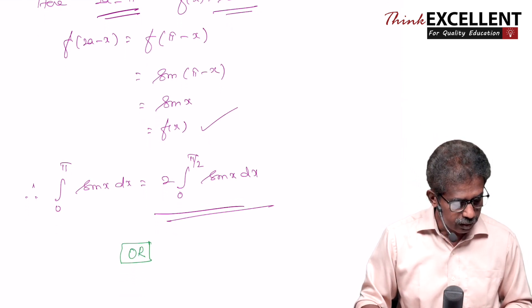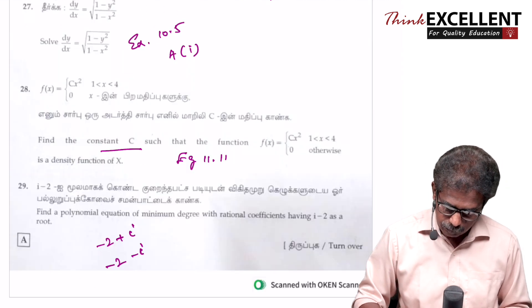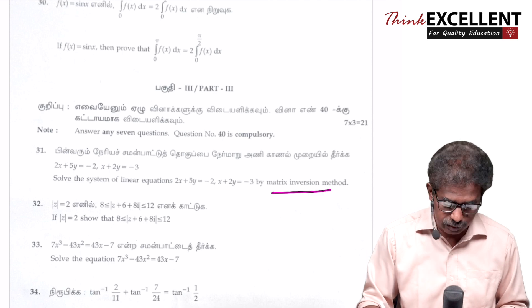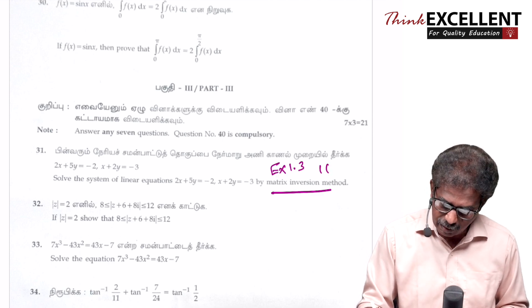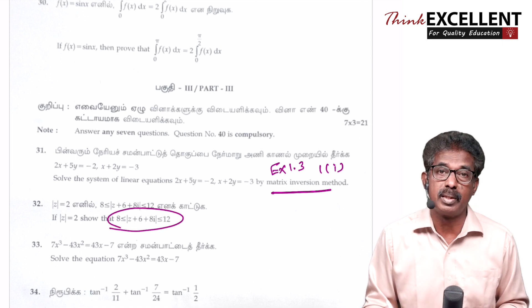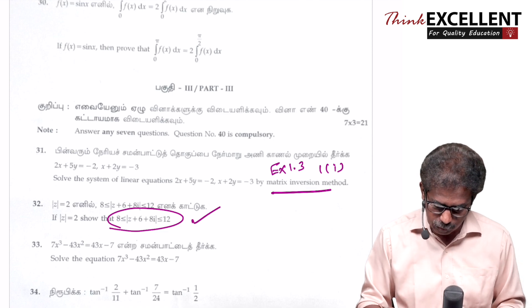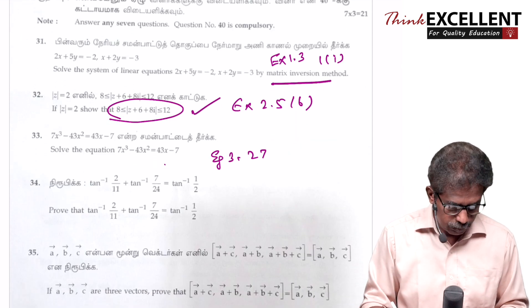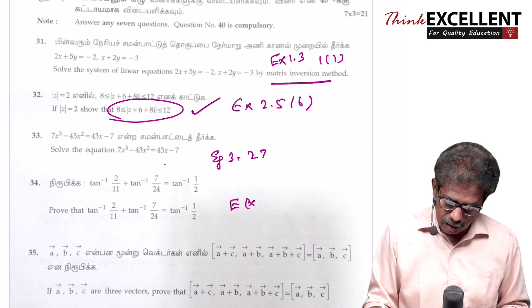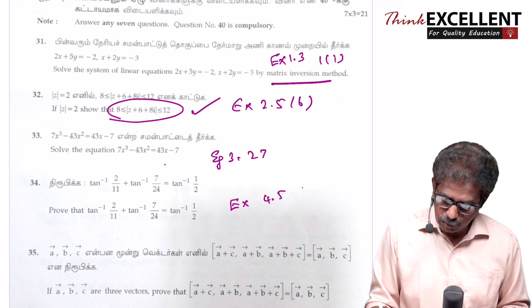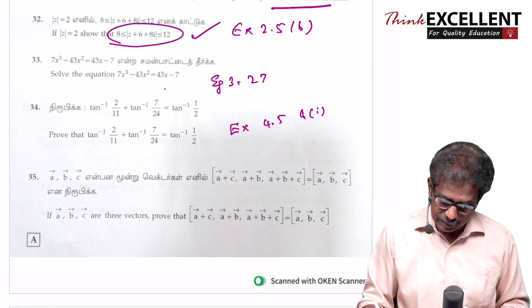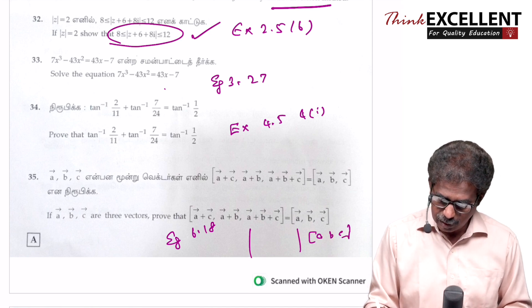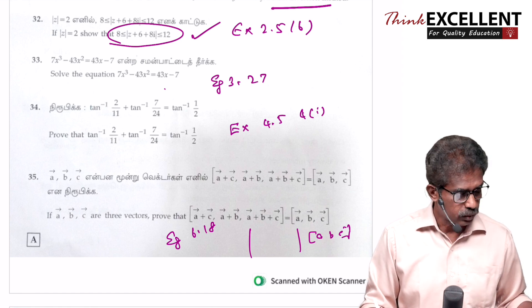That is all of Section B. Then three-mark questions: Question 31 uses the matrix inversion method — Exercise 1.3, first question, first subdivision. Question 32 involves reasoning about inequalities — upper and lower limits with a midpoint, done very easily. Question 33 is a reciprocal equation, Example 3.27, Exercise 2.5 or 6. Question 34 is a prove-that book question from Exercise 4.5, fourth question. Question 35 is Example 6.18, using Theorem 6.6 — the determinant (box product) of vectors A, B, C. Question 36 uses the chain rule, Exercise 8.6, first question.